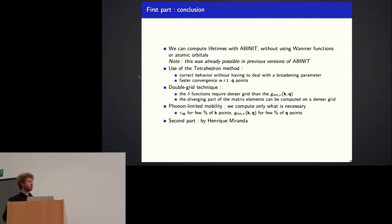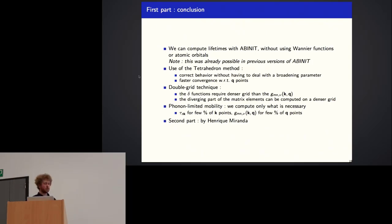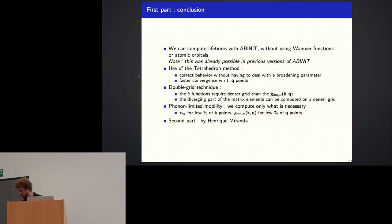In conclusion for the first part: we can compute lifetimes with Abinit using the tetrahedron method, which gives correct behavior without a broadening parameter and faster convergence with respect to Q points. The double grid technique uses a dense grid for energies, or for the long-range part of matrix elements in polar materials. Finally, we compute the phonon-limited mobility by computing only what is necessary — lifetimes for a few percent of K points, and matrix elements for a few percent of Q points.